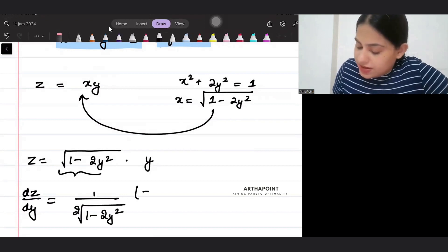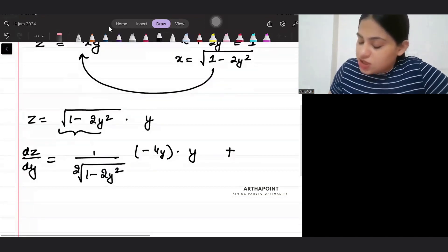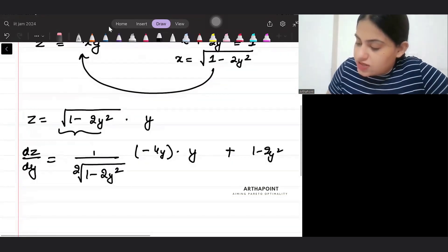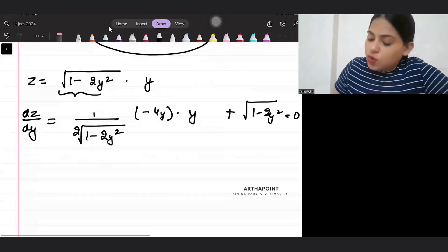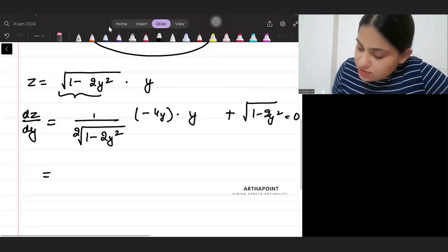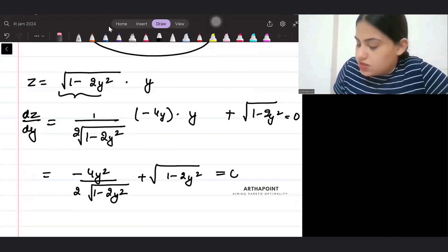This will be minus 4 y into second as it is, plus differentiate the second into first as it is and equate it to 0. So what will you get? You will get minus 4 y square upon 2 root 1 minus 2 y square, plus 1 minus 2 y square under root is equal to 0.